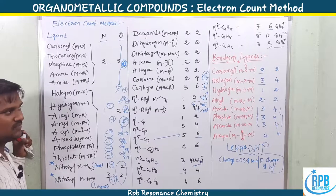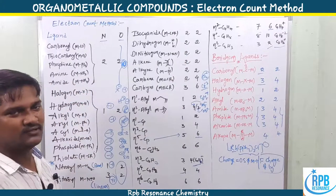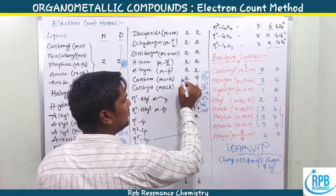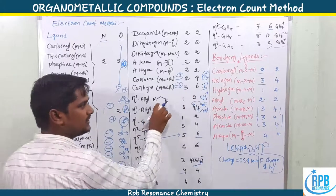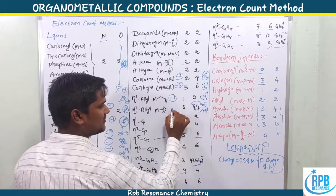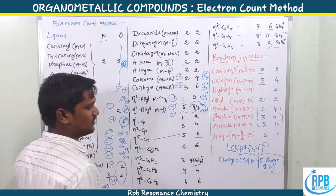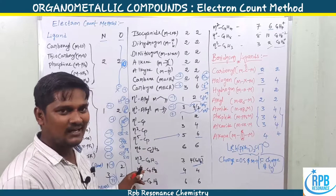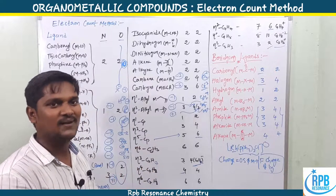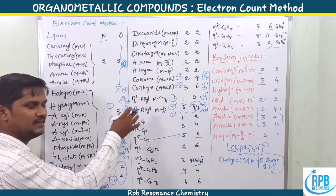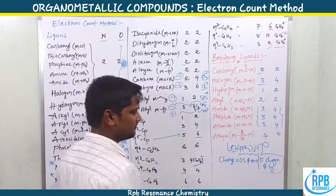For nitrosyl: bent NO has formal charge −1, and linear NO has formal charge +1. Neutral ligands like isocyanide, dihydrogen, and dinitrogen all have formal charge zero. Carbene CR2²⁻ has formal charge −2, and carbyne CR³⁻ has formal charge −3. For allyl C3H5⁻, formal charge is −1; in the presence of a four-electron donor configuration it is −1, and as C3H5⁺ it is +1 as a two-electron donor. For Cp, the negative charge and hapticity together predict the formal charge.